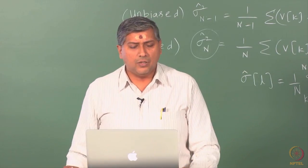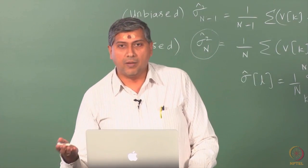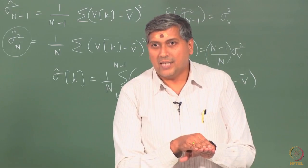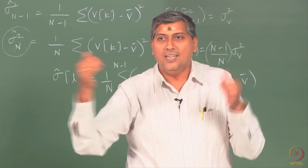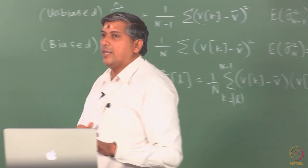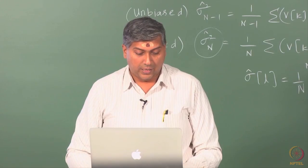What is the definition of a MVUE — minimum variance unbiased estimator? It should be unbiased, and among the class of unbiased estimators, it will have the least variability. We are not comparing it with a biased estimator; if we did, the biased one would always beat it by sacrificing bias arbitrarily to get more precise estimates. Therefore, we restrict ourselves to the class of unbiased estimators.